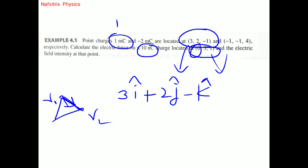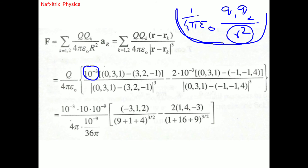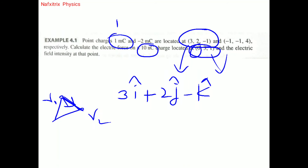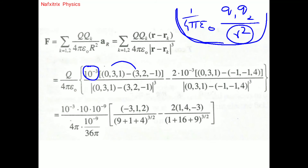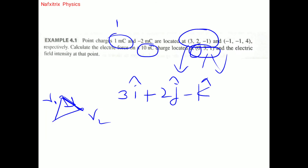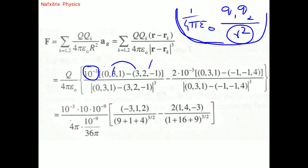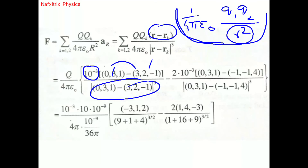To find the direction and distance between the two points, we compute r − r1. Taking (0, 3, 1) minus (3, 2, -1) gives the displacement vector, which is then divided by its magnitude to get the unit vector.